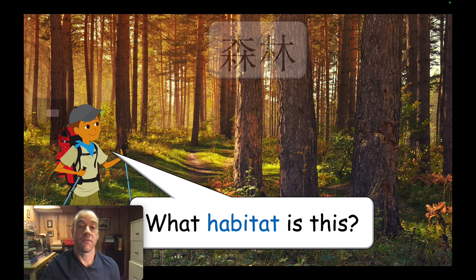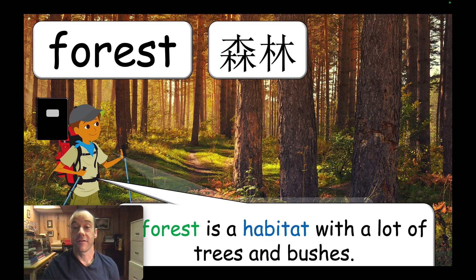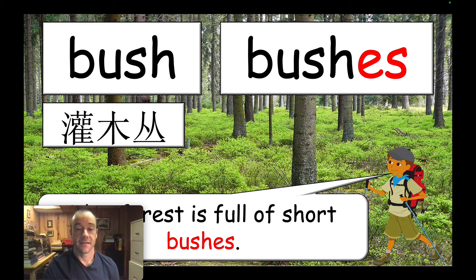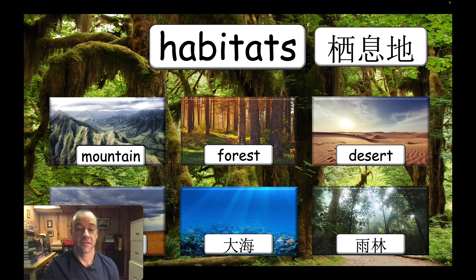Rinse and repeat until you have all of the habitats written down in their notebook and they know them all. We also have the word 'bush' and 'bushes.' Then let's say them one more time — this is a good chance to drill. So you have: habitat, mountain, forest, desert, grassland, ocean, and rainforest. Those are the basic words.